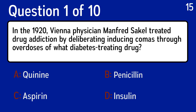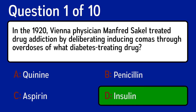The first question is: in the 1920s, Vienna physician Manfred Sackle treated drug addiction by deliberately inducing comas through overdoses of what diabetes-treating drug? The correct answer is D, insulin.